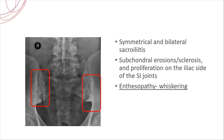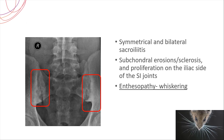If this continues, you can classically see enthesopathy. Enthesopathy refers to inflammation at the areas of attachment of ligaments and tendons into the bone, also called enthesitis. This leads to a characteristic whiskering appearance — a whisker being a tuft of hair found around the mouth of lower animals.